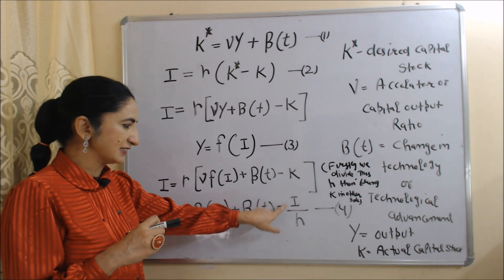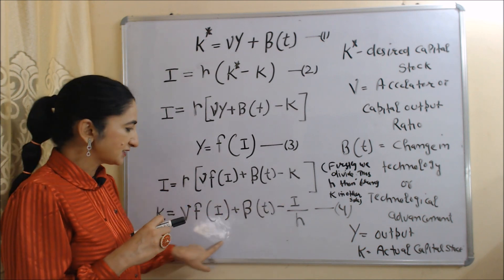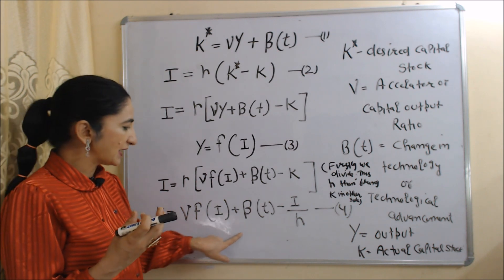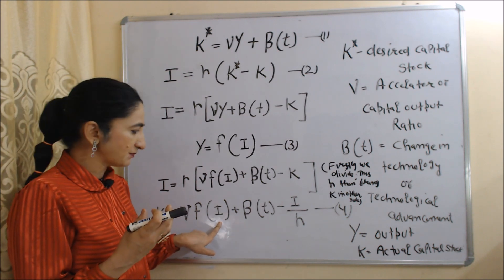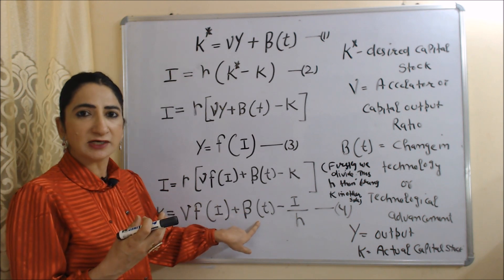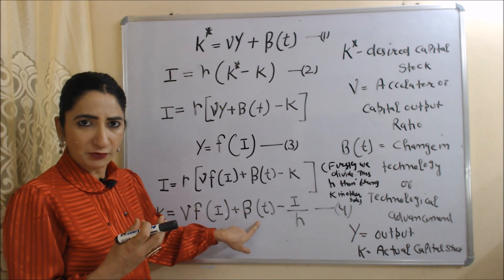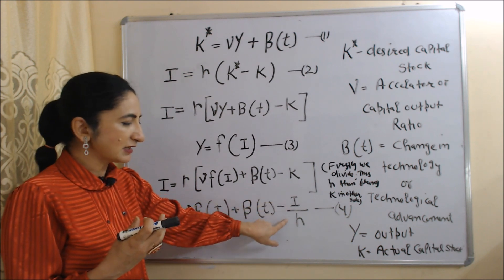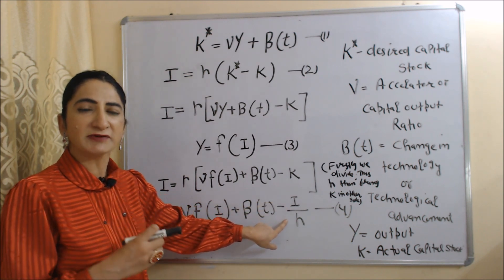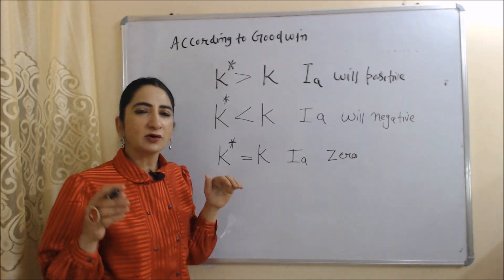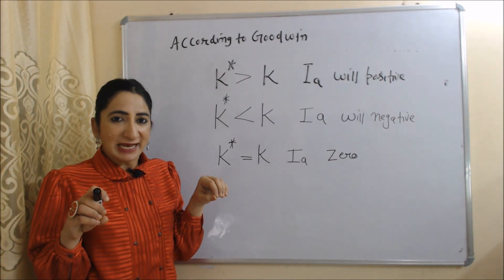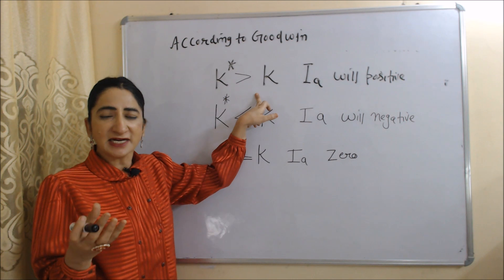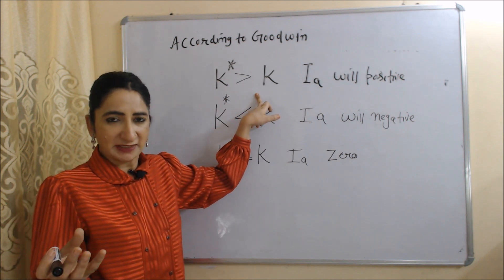The equation I/λ shows how much capital we need — it depends on capital needed for investment purpose and capital needed for technological improvement, minus I/λ. Here, I/λ means our previous investment, our past investment.